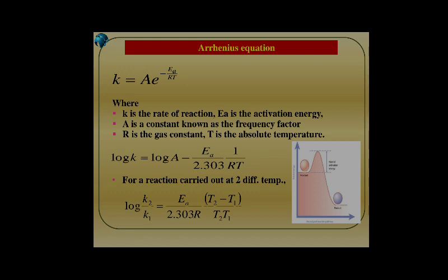log K2 divided by K1 equals Ea divided by 2.303 R, multiplied by T2 minus T1 divided by T2 times T1.